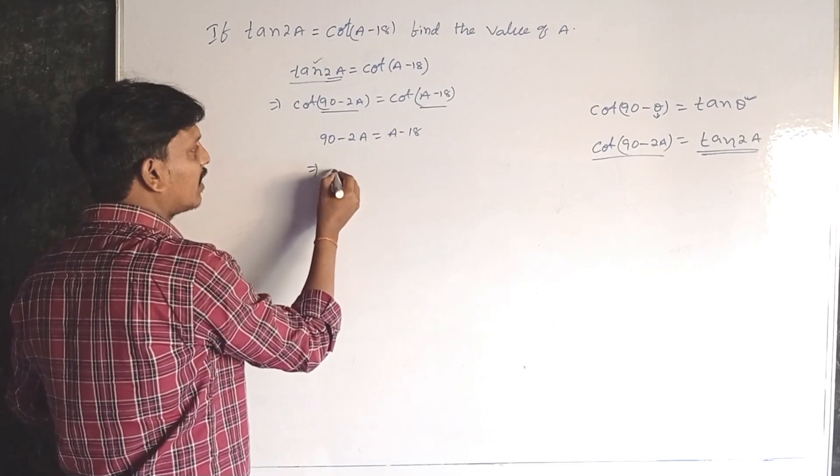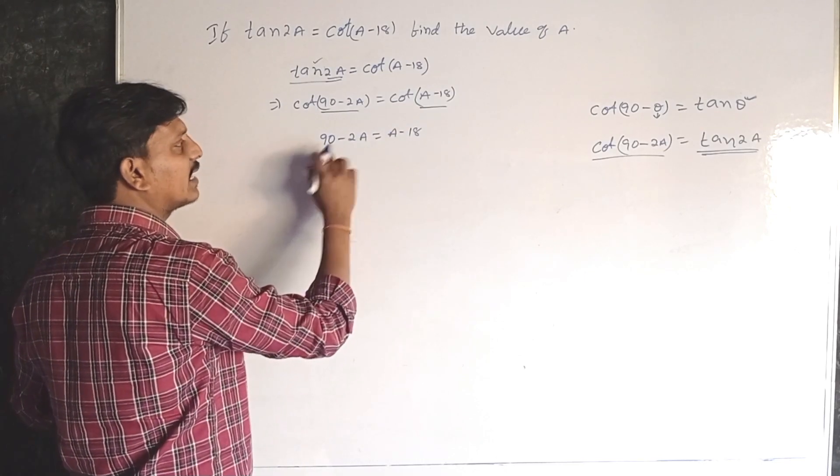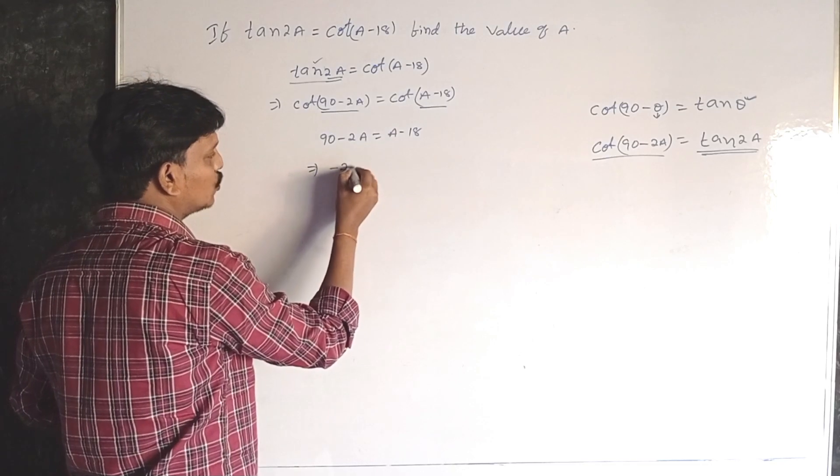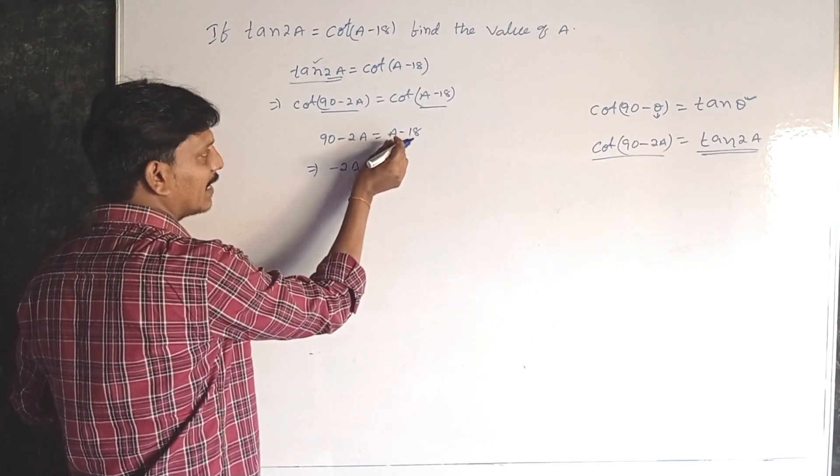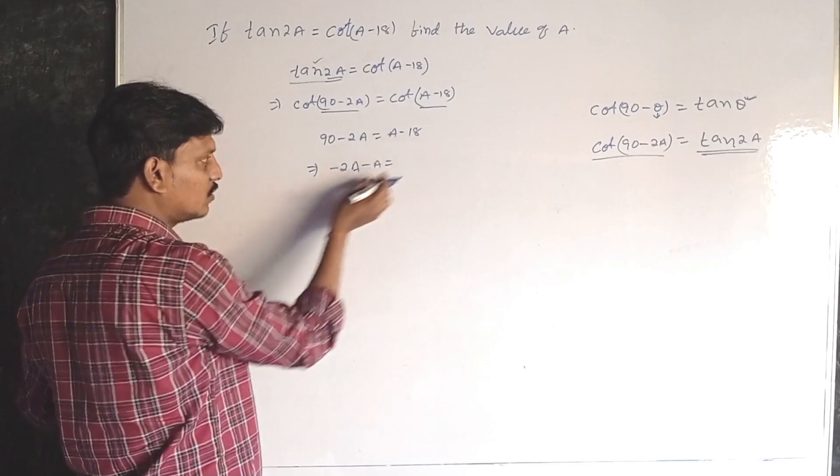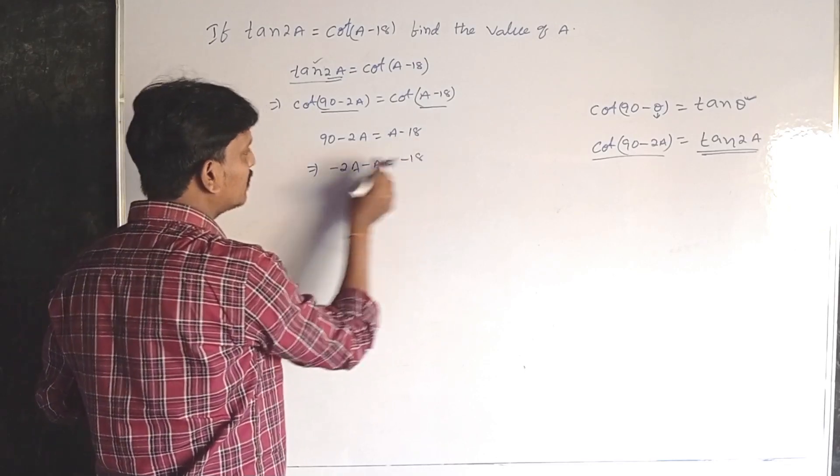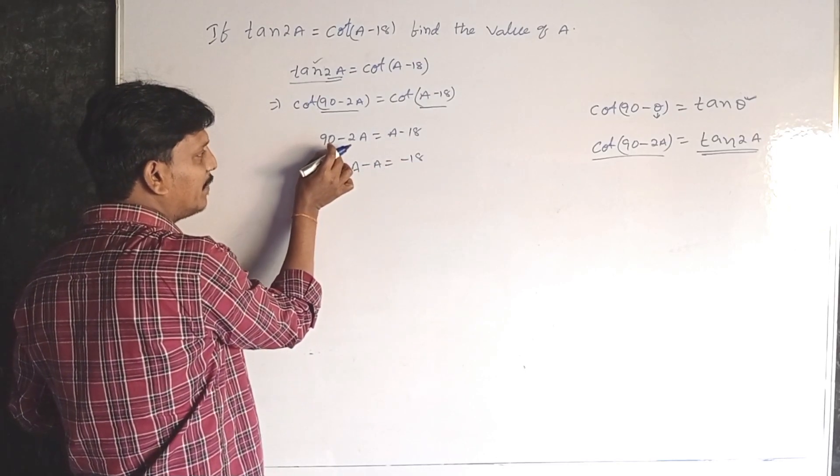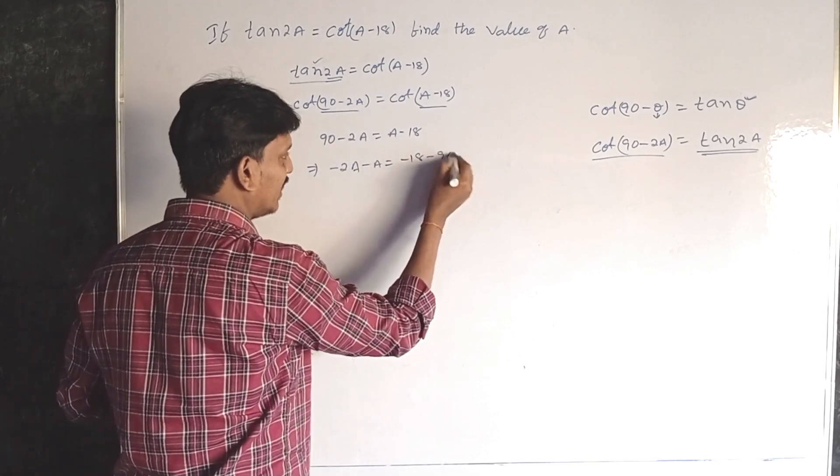Now all a values on one side and other values on another side. Minus 2a, plus a will become minus a from that side to this side. Minus 18, plus 90 will change to minus 90.